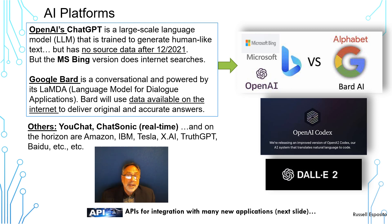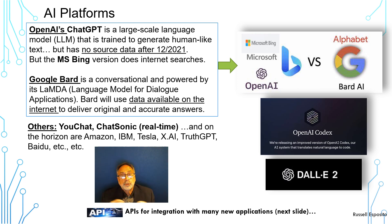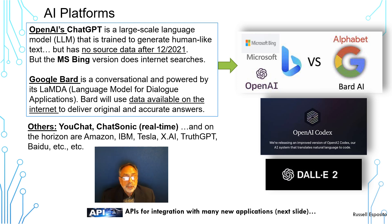Google is not going to wait for their search engine to become obsolete, so they've created BARD AI. BARD is their own version of AI and it's pretty sophisticated. They're rolling it out and it will be able to search the internet — not only drawing from stored databases but gleaning current information from the web. There are others like YouChat and Chatsonic, which is real-time, and there'll be others from Amazon, IBM, Tesla, XAI, TruthGPT, and BADU is the Chinese version. There will be many AI foundational platforms.